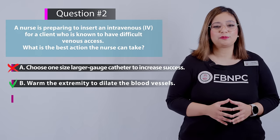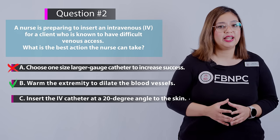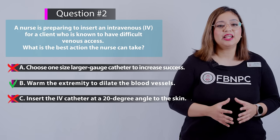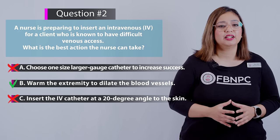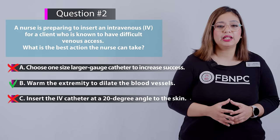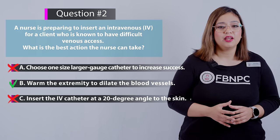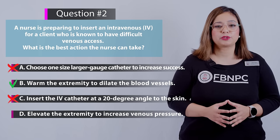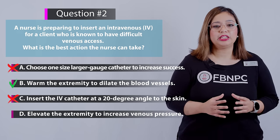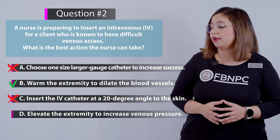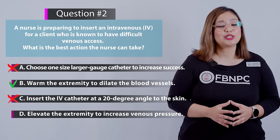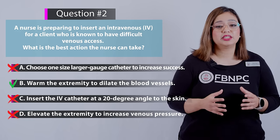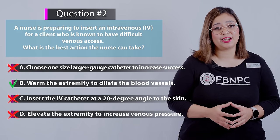Option C: Insert the IV catheter at a 20-degree angle to the skin — incorrect. Inserting a catheter at a 20-degree angle is not recommended and is most likely to result in perforating through the vein; it should be inserted at a lower angle. Option D: Elevate the extremity to increase the venous pressure — incorrect. This action actually causes decreased venous pressure and reduces the nurse's chances of successfully inserting the IV.